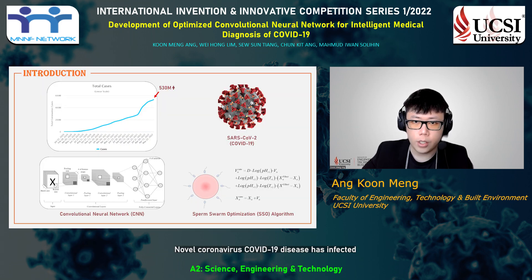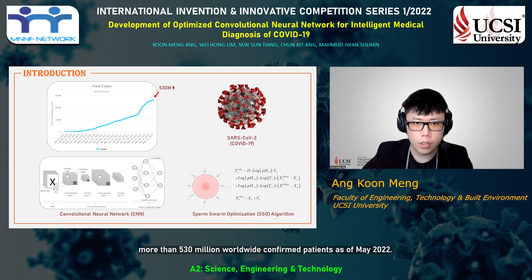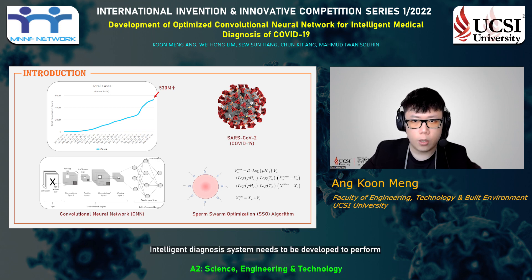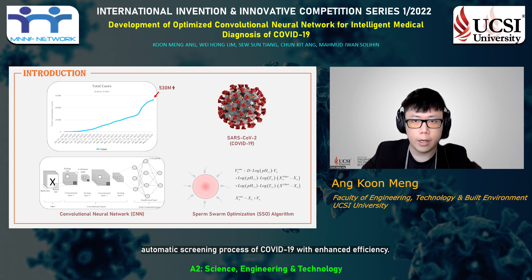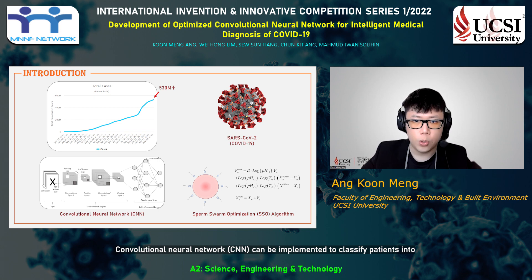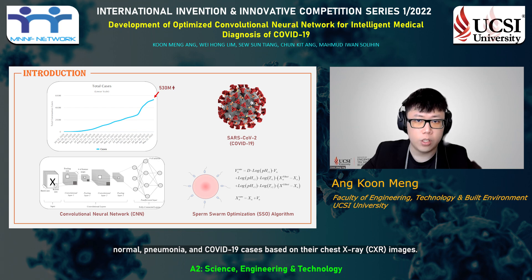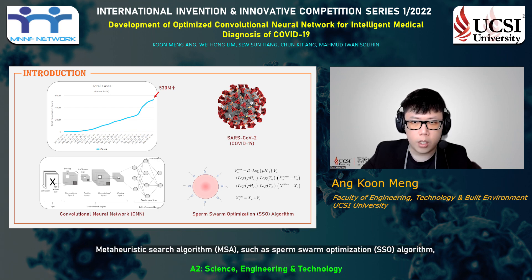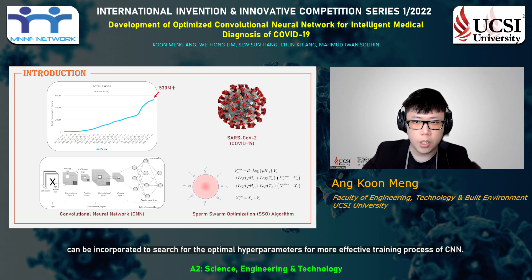The novel coronavirus COVID-19 disease has infected more than 530 million worldwide confirmed patients as of May 2022. An intelligent diagnosis system needs to be developed to perform automatic screening of COVID-19 with enhanced efficiency. A Convolutional Neural Network (CNN) can classify patients into normal, pneumonia, and COVID-19 cases based on their chest X-ray (CXR) images. A Metaheuristic Search Algorithm (MSA) such as Sperm Swarm Optimization (SSO) can be incorporated to search for optimal hyperparameters for a more effective CNN training process.